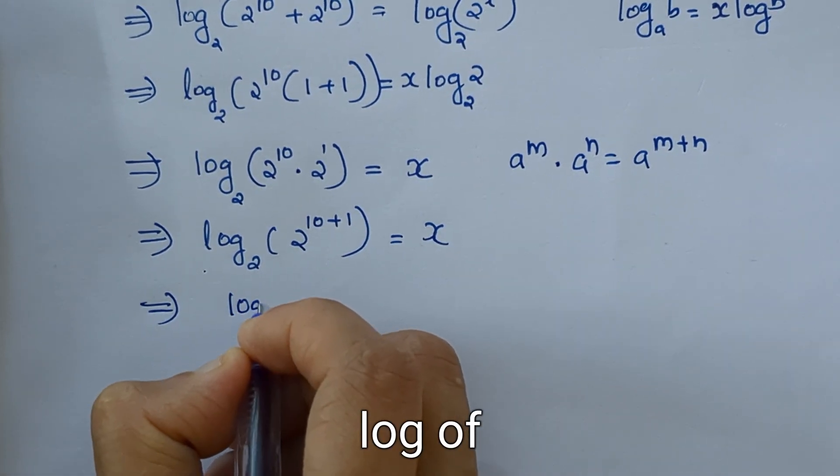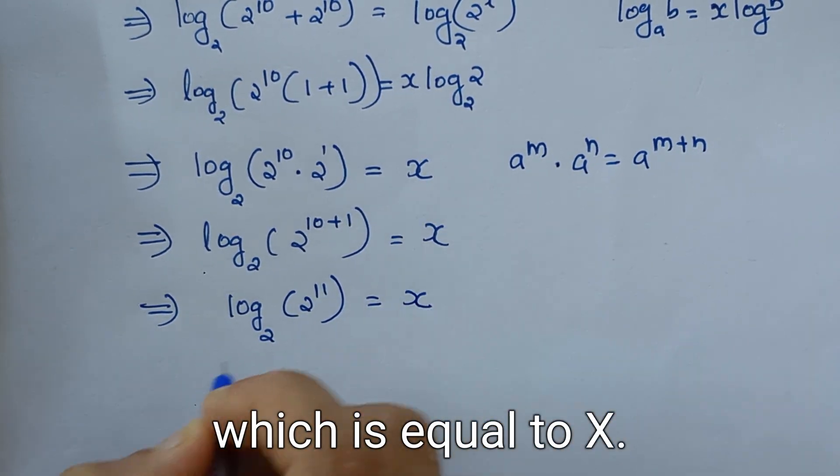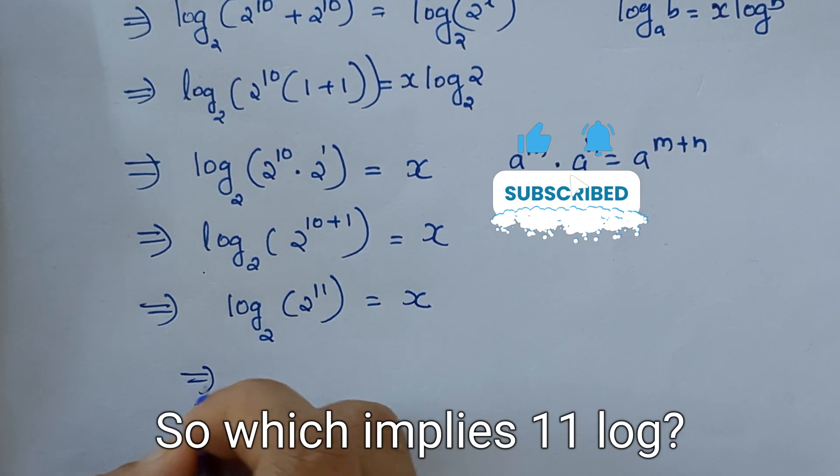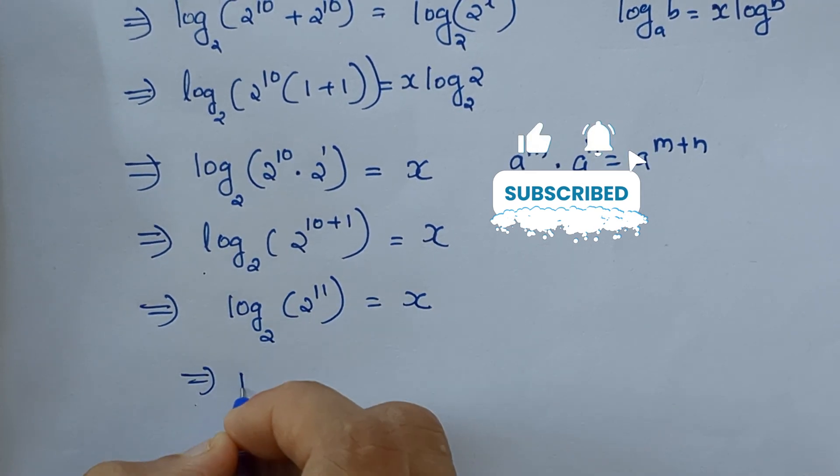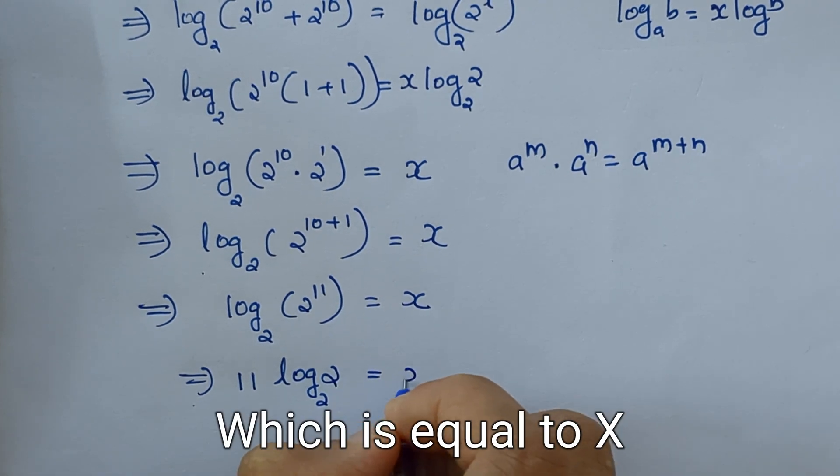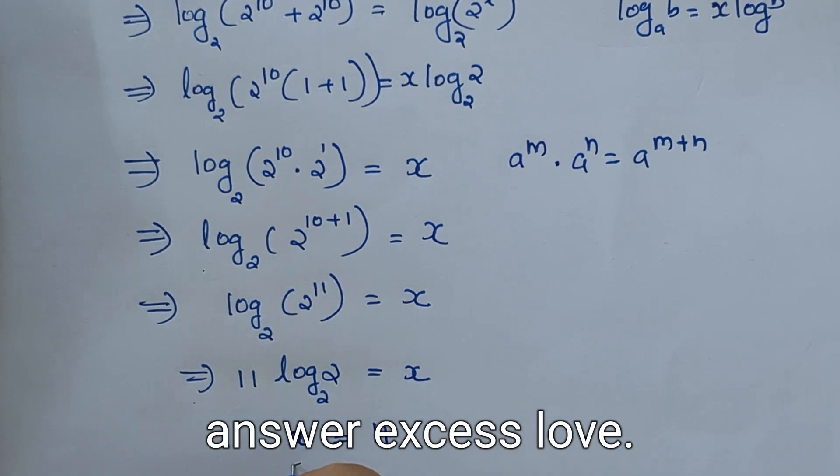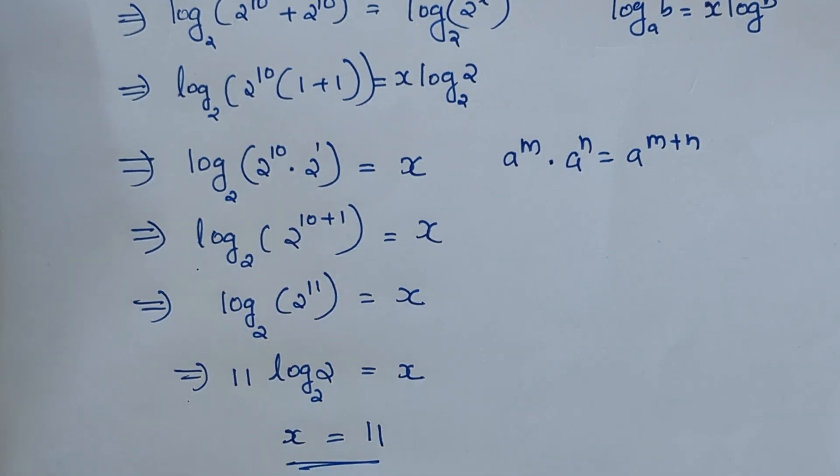This implies log of 2 raised to 11, which is equal to X, so which implies 11 log 2, which is equal to X. That implies X equal to 11, so we got the answer X as 11.